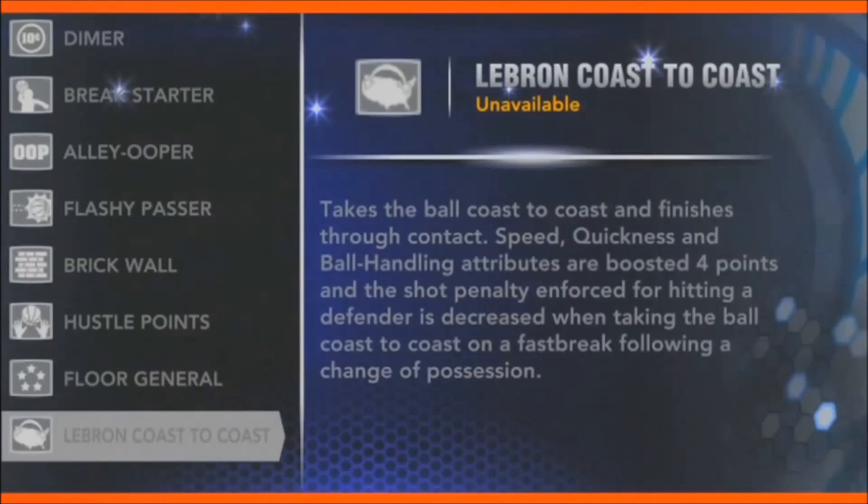When you pre-order NBA 2K14, you get one extra signature skill in the King James Bonus Pack: the LeBron Coast to Coast Skill. It's a combination of One Man Fast Break and Finisher. It gives you the one-man fast break skill all the way up and down the court, then combines that with last year's Finisher when you're finishing the fast break.